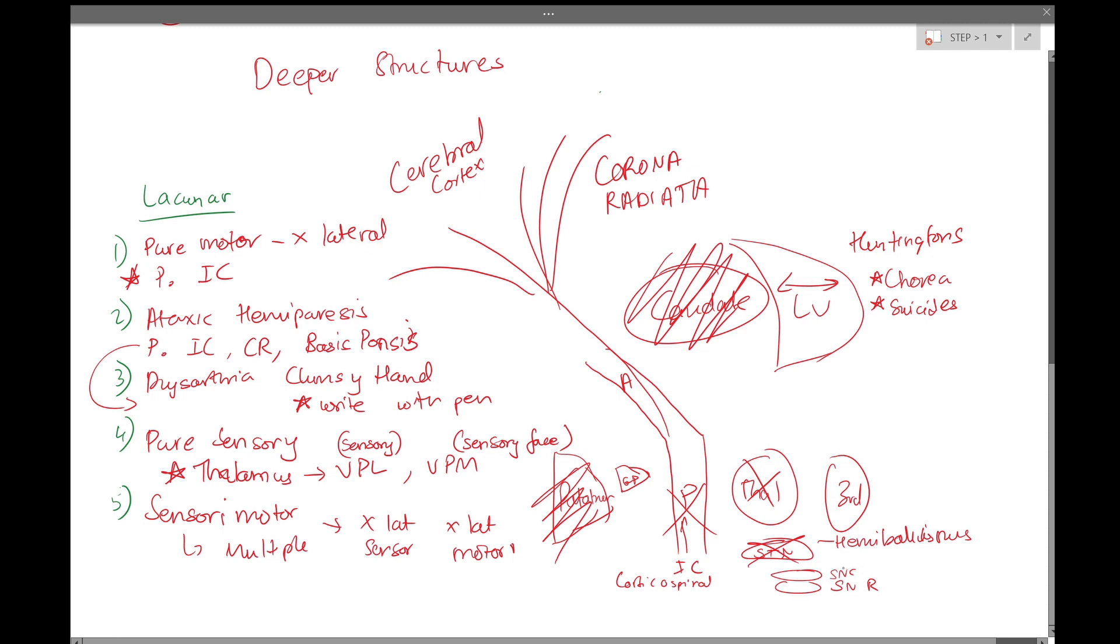Next, we have the substantia nigra pars compacta. When this is knocked out, you get Parkinson's disease. One important symptom of Parkinson's is the bradykinesia, or slow movements. You can remember that the C in substantia nigra pars compacta is the can move portion of the basal ganglia, while pars reticulata has the R for reduced movement. So when you knock out the substantia nigra pars compacta, the ability for the patient to move is decreased, therefore causing the bradykinesia that's found in Parkinson's disease.